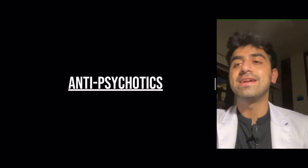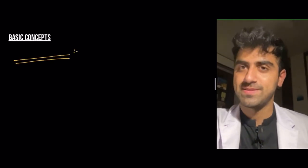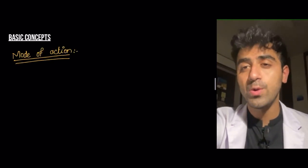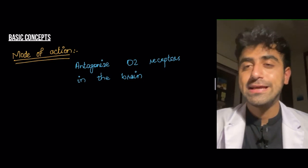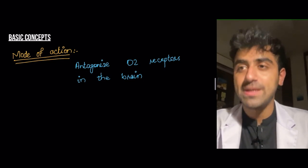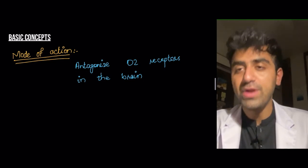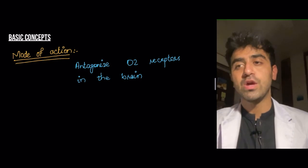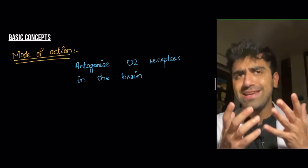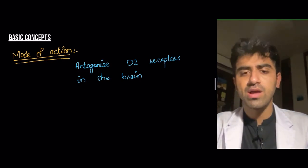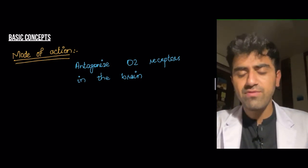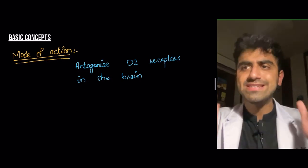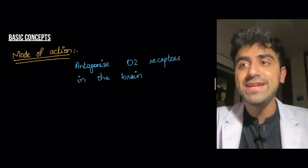Let's start with antipsychotics. What's the mode of action — how do they work? They antagonize the D2 receptors in the brain. This is important to remember. You might be saying you can read this in a book or watch any video and understand that they antagonize D2 receptors, but why D2 receptors?